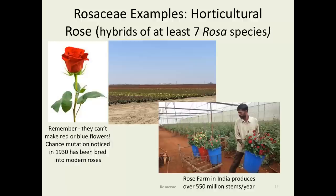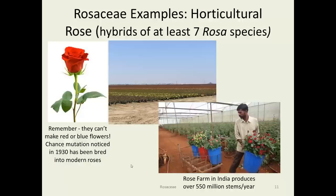Horticultural examples of Rosaceae use: the rose. You can see a picture of rose farms in the Central Valley of California, which is as flat as Iowa. There's also a rose farm in India that produces over 550 million stems per year — they say they are the largest rose producer in the world, and they're expanding to Ethiopia. Originally, naturally, there are no red or blue flowers in this family; however, a mutation back in 1930 produced a slightly reddish rose that has been selected and improved upon, so now it's hard to imagine that red roses aren't natural.